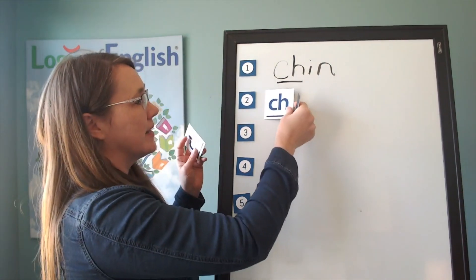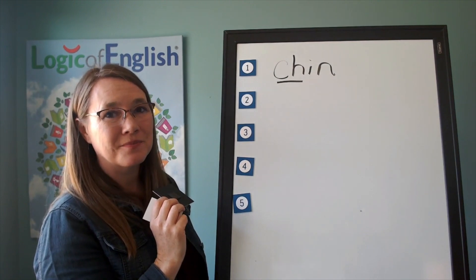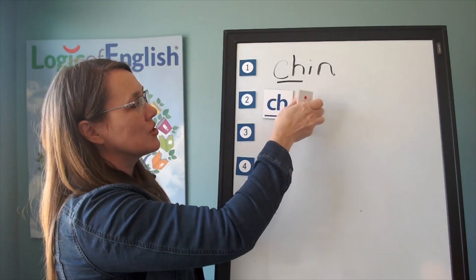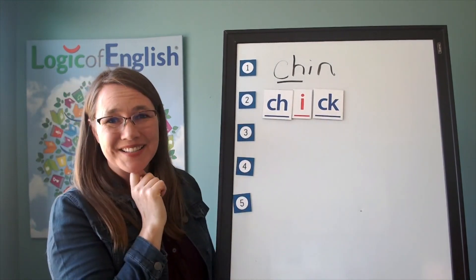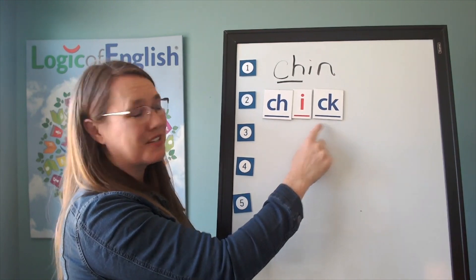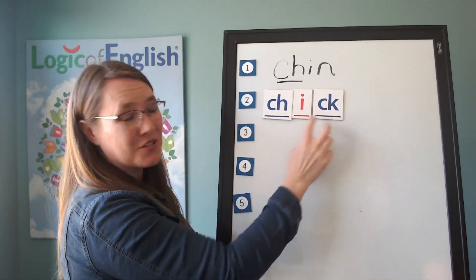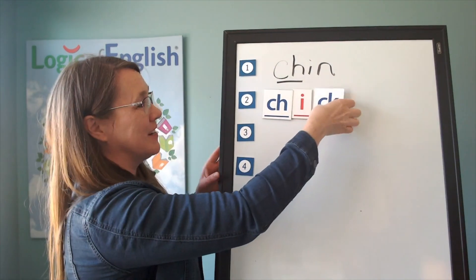And now help me to write it. Oh, I probably didn't give you enough time. And now help me to write it. Ch-i-ck. Great. And let's sound it out. Ch-i-ck. Chick. Did you notice we have two multi-letter phonograms in this word? That's kind of fun.